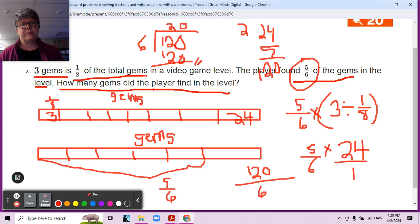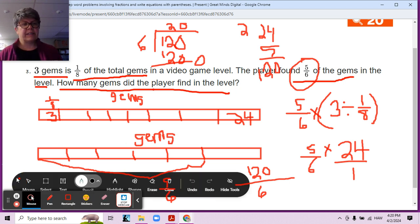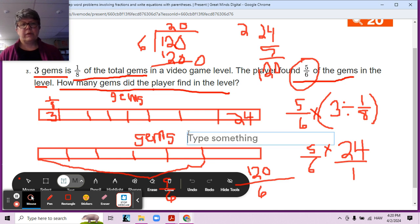So how many gems did the player find in the level? They found 20 gems. And we're going to make sure that we write that as a sentence. Somewhere on the page, the player found 20 gems. The more you practice it, the easier it gets. You just need to keep on practicing.